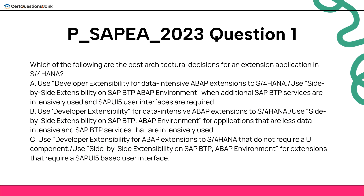Which of the following are the best architectural decisions for an extension application in S/4HANA? A. Use developer extensibility for data-intensive ABAP extensions to S/4HANA. Use side-by-side extensibility on SAP BTP ABAP environment when additional SAP BTP services are intensively used and SAP UI5 user interfaces are required.